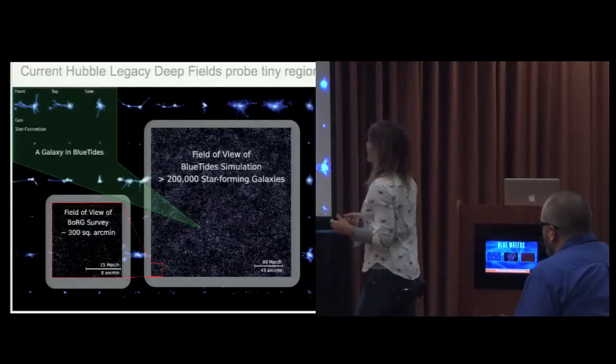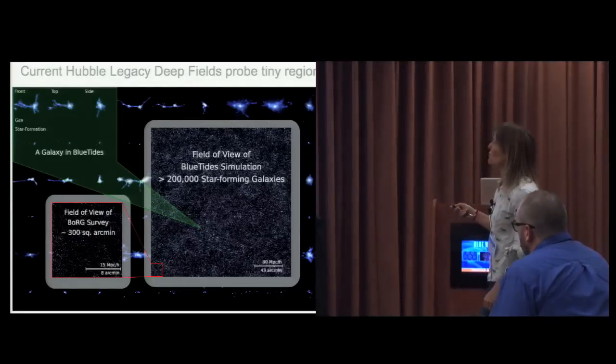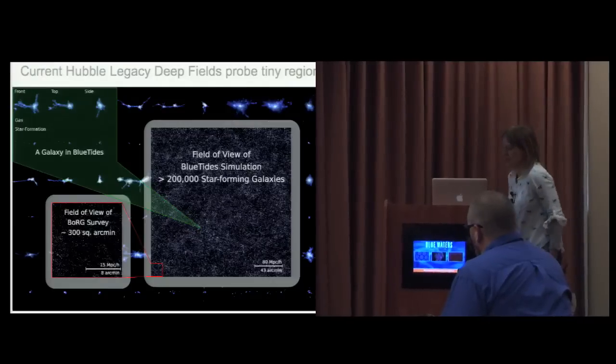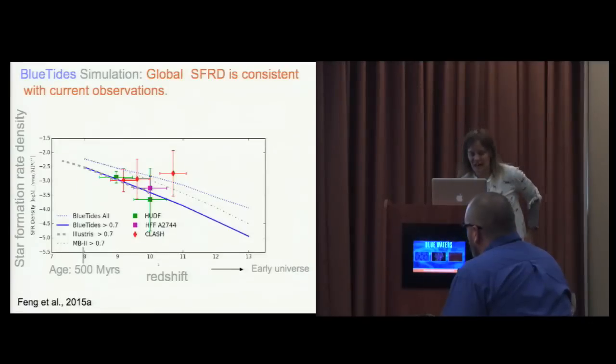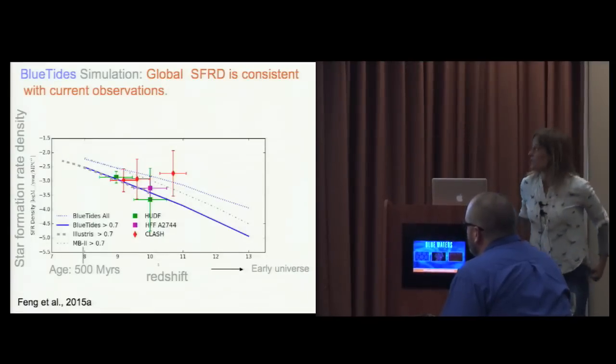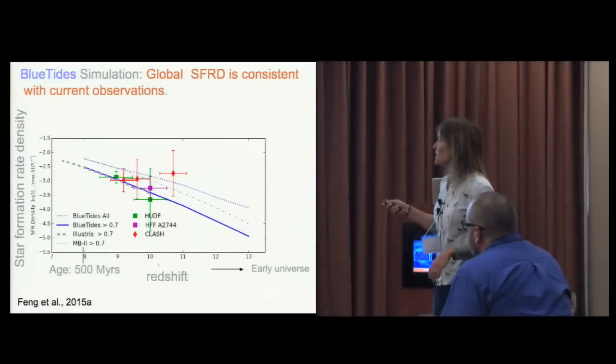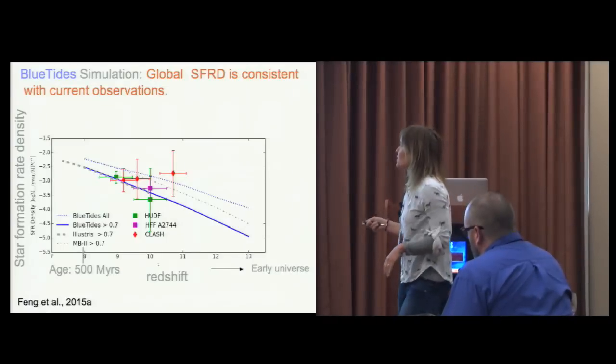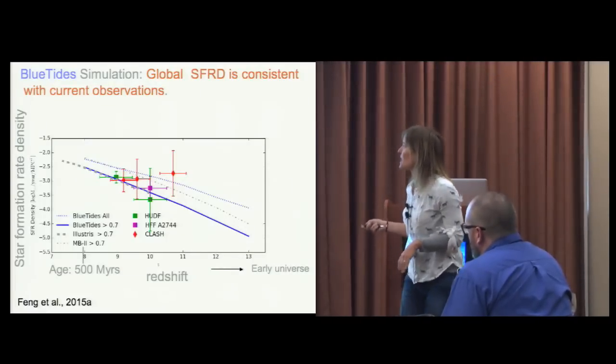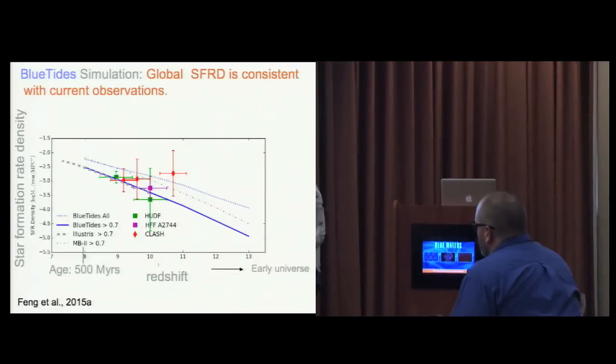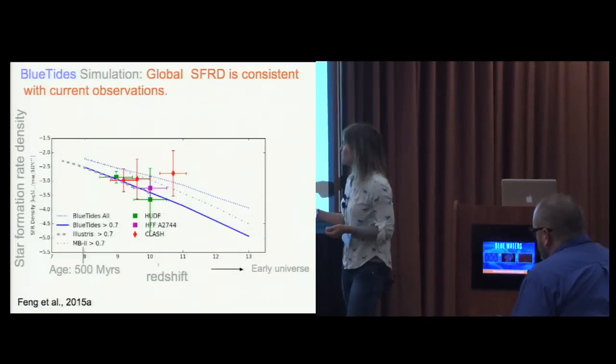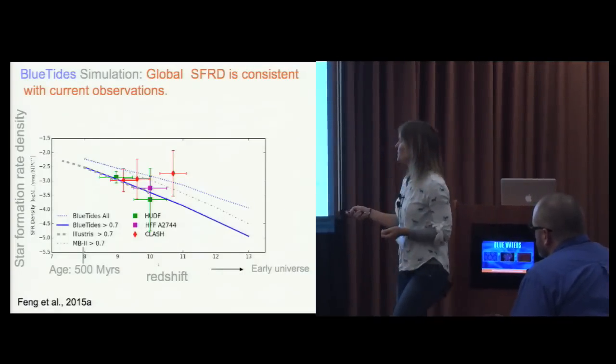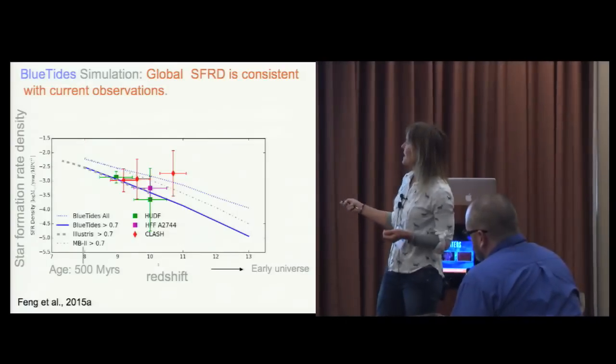What kind of predictions can we make? The simulations first predict the kind of star formation rate as a function of redshift that is expected. You can make a plot of what we call the star formation rate density as a function of time, where this is early universe, about 500 million years.